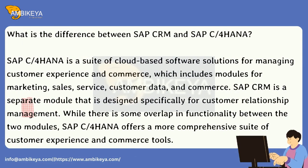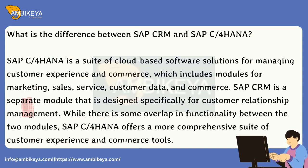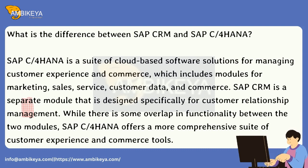What is the difference between SAP CRM and SAP C4HANA? SAP C4HANA is a suite of cloud-based software solutions for managing customer experience and commerce, which includes modules for marketing, sales, service, customer data, and commerce. SAP CRM is a separate module designed specifically for customer relationship management. While there is some overlap in functionality, SAP C4HANA offers a more comprehensive suite of customer experience and commerce tools.